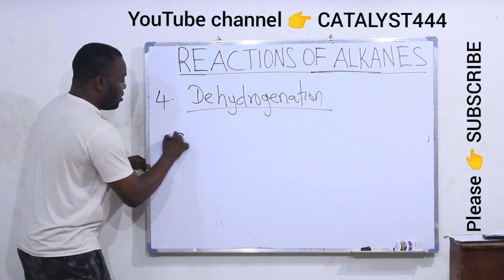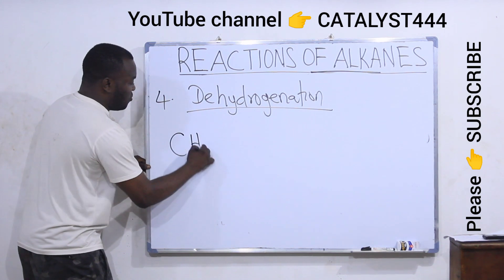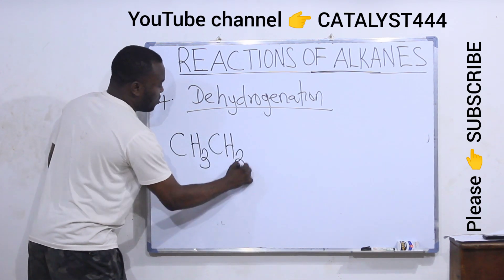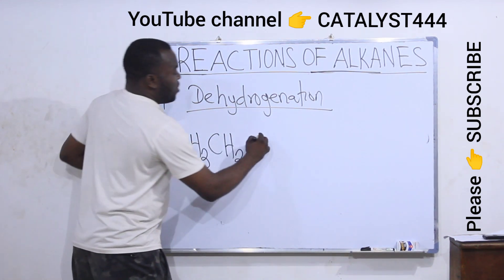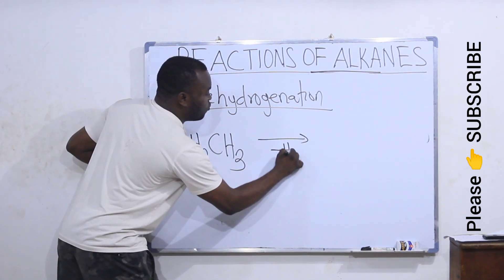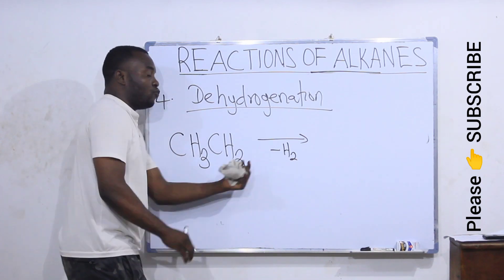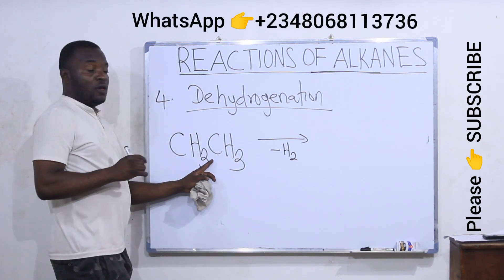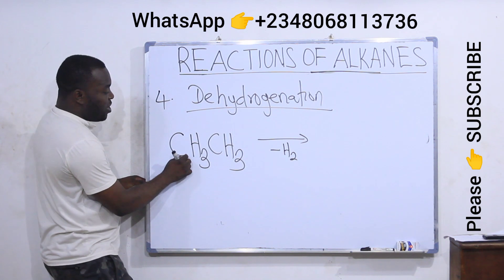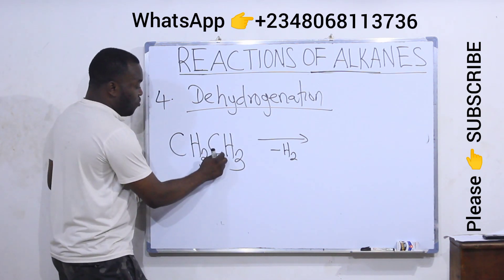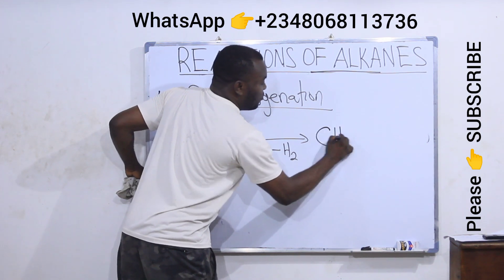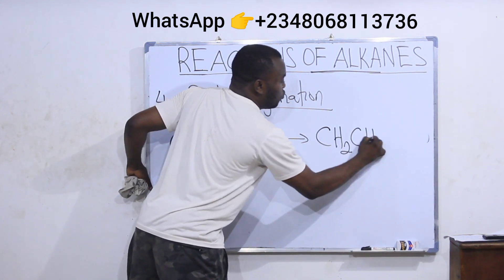If I have an alkane like this — CH3-CH3 — this is ethane. If I remove two hydrogen atoms from here, that is minus H2, I'm subtracting two H. I will remove one H from the first carbon and the other H from the second carbon. So I will have CH2-CH2.